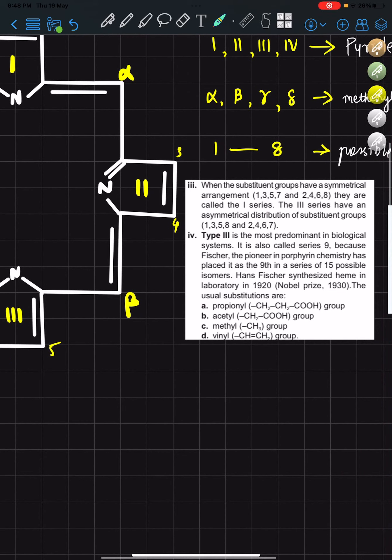So here they are called type 3. Type 3 are the ones which are biologically more useful, present, and predominant. They are also called series 9 because Fischer, who was a pioneer in porphyrin chemistry, placed it as the ninth in a series of 15 possible isomers based on the substitution of these groups.